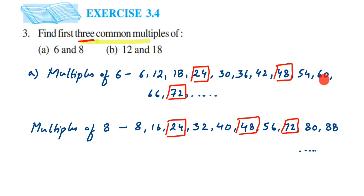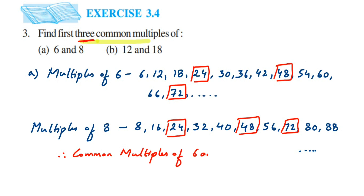It's not necessary that you have to take 24, 48, 72 — you can take any common multiple, but writing the table is much easier since we already know the tables. It's easy to write down and easy to check for common multiples. Therefore, the common multiples of 6 and 8 are: 24, 48, and 72.